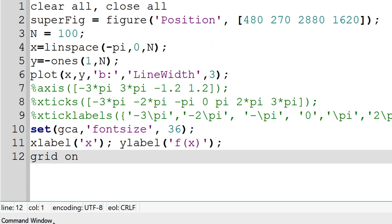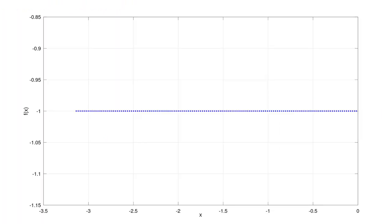And also add grid to figure by having grid on. When you run, it shows fx equal to minus 1 at minus pi to 0.